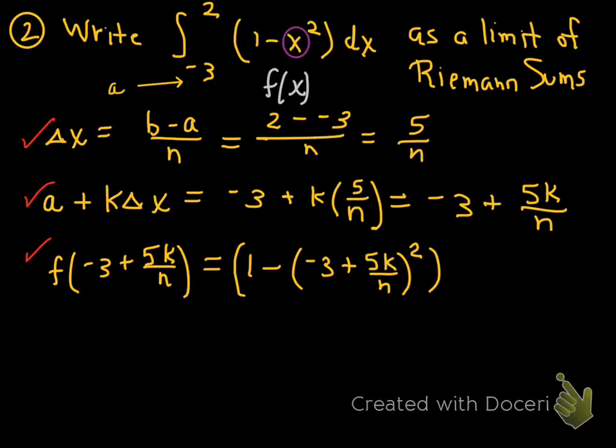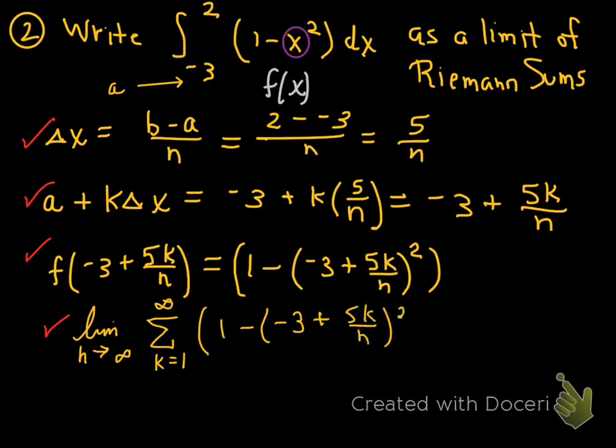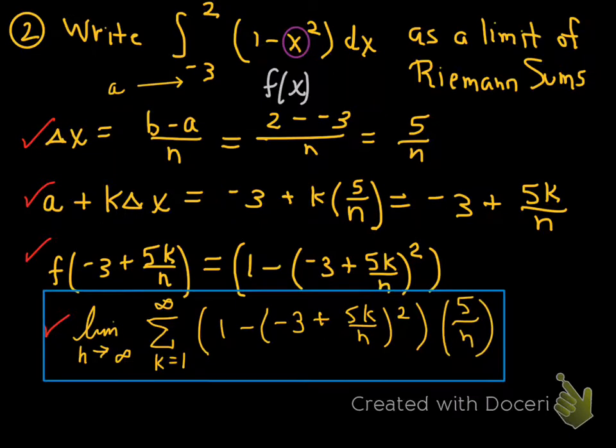Done with the tough stuff. Just got to put this in my blueprint limiting format. That is the limit as n goes to infinity of the sum from k equals 1 to infinity of 1 minus quantity negative 3 plus 5k over n squared times 5 over n.